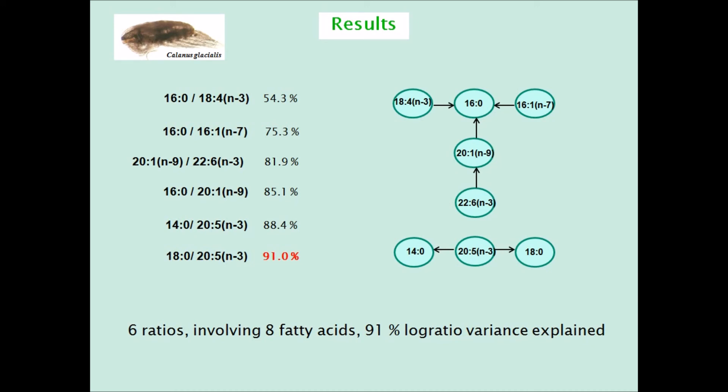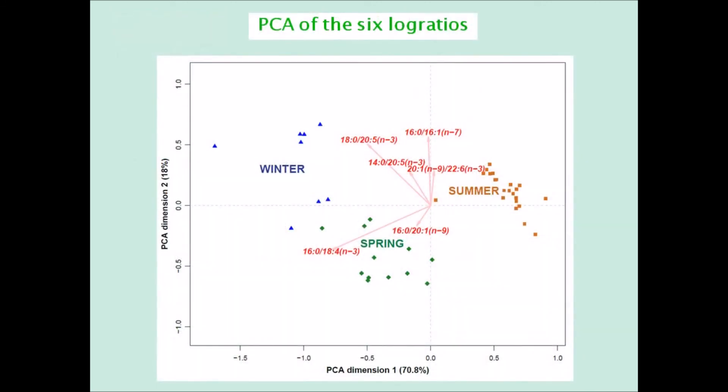So using just these six log ratios, remember that 39 of them would be needed to explain 100% of the variance in this example. Using just six of them, we essentially have retained the main structure of the data set, and can perform principal component analysis, for example, of the log ratios in a much simpler way.